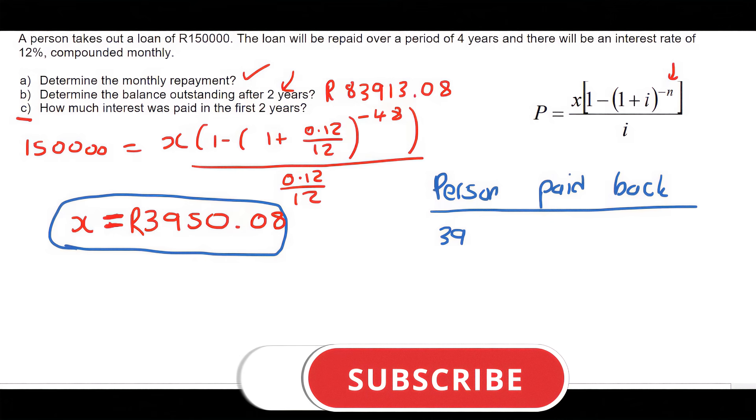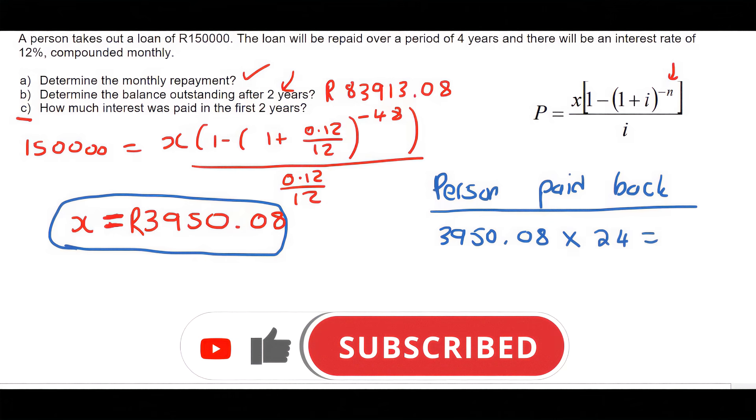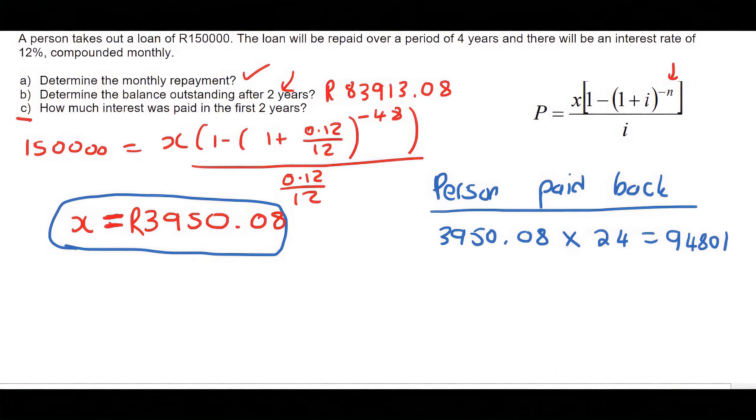And all I'm going to do, I'm going to say 3,950.08 times by 24. And that gives us 94,801.92.